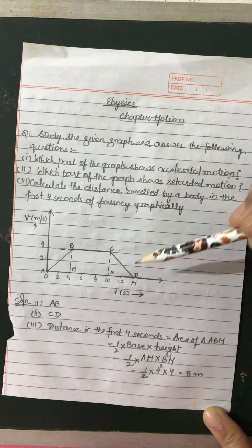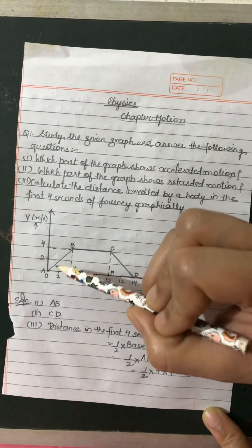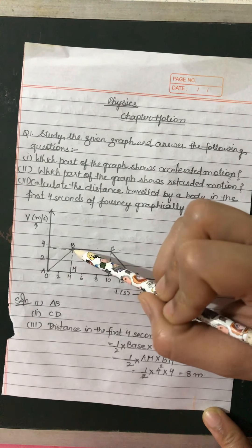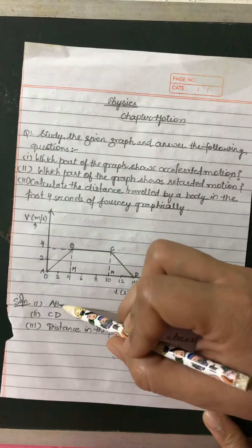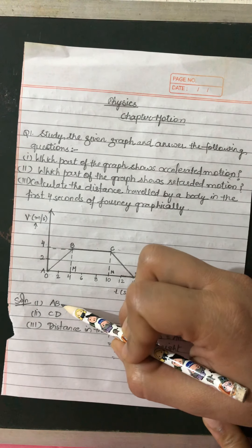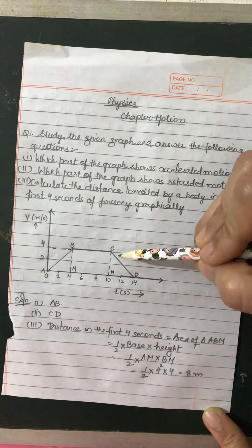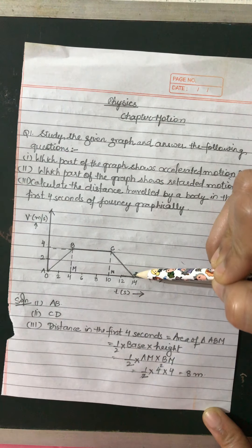Now you see the question: which part of the graph shows accelerated motion? AB shows accelerated motion. For the second part: which part of the graph shows retarded motion? CD shows retarded motion.